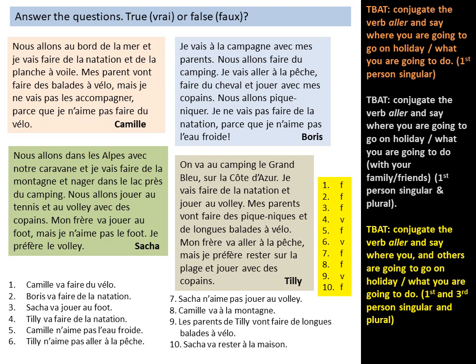Number one: Camille is going to go cycling — that is false. It says she's going to faire de la natation et de la planche à voile — she's going to go swimming and windsurfing. Number two: Boris is going to go swimming — that is also false. He says je vais aller à la pêche, faire du cheval, et jouer avec mes copains — he's going to go fishing, horse riding, and play with his friends.